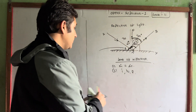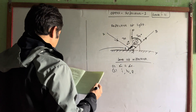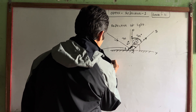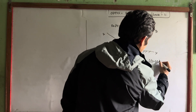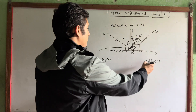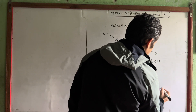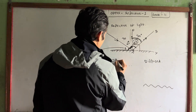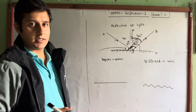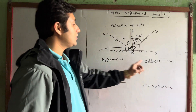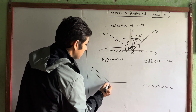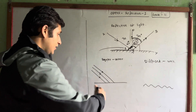This is the last topic: regular and diffuse reflection. Regular reflection occurs when the surface is plain and smooth, like a mirror. Diffuse reflection occurs when the surface is rough, like a wall. Three parallel rays hitting a smooth surface will reflect in parallel — this is regular reflection.